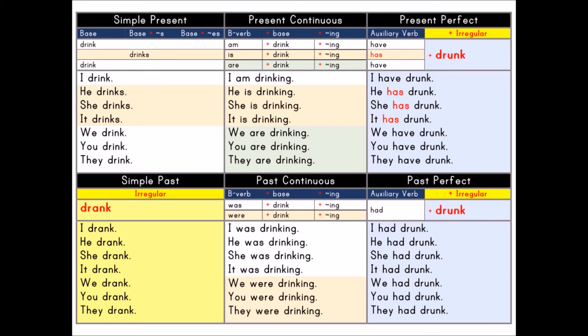Present perfect. Auxiliary verb plus irregular verb. Auxiliary verb: have or has. Irregular: drunk. I have drunk. He has drunk. She has drunk. It has drunk. We have drunk. You have drunk. They have drunk.